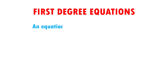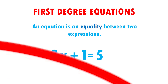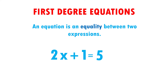An equation is an equality between two expressions. This means that this here equals the same as this here, which is why it has an equal sign in the middle. They also have a variable, which is a letter whose value we do not know. In addition, its variables would always be raised to the first power.